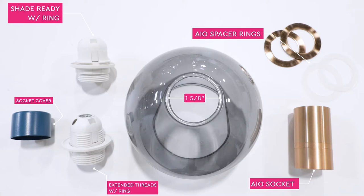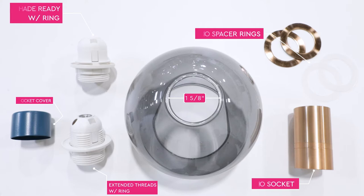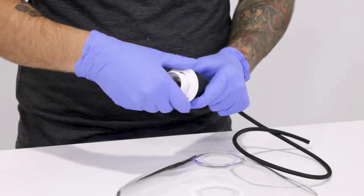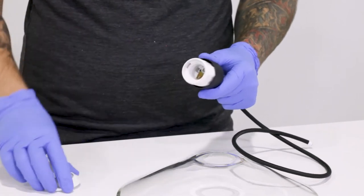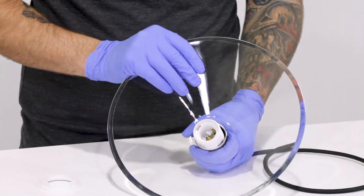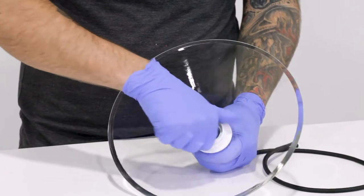Now there are a couple different variations of how you can use our sockets with this size shade, and we'll go through each of them one by one, starting with an extended thread socket with a half cap socket cover. The bottom of the socket cover acts as a lip that goes flush against the top of your Eurofitter shade opening, and you use the socket ring underneath to secure the shade in place.